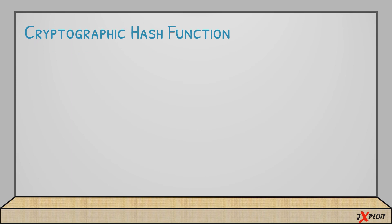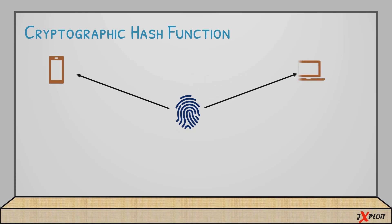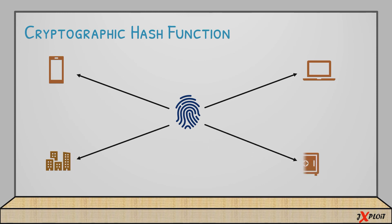What is a cryptographic hash function? The best example I can give you that you can easily relate to is your fingerprint — the fingerprint you use to unlock your mobile phone, unlock apps, your laptop, or enter office premises. Some digital lockers support a password plus fingerprint combination. All these devices use your fingerprint because your fingerprint is your identity.